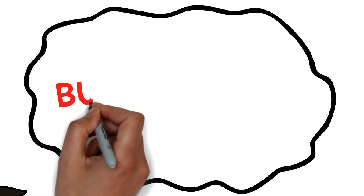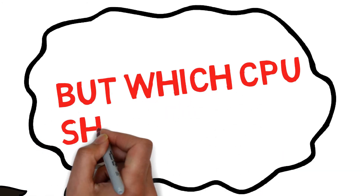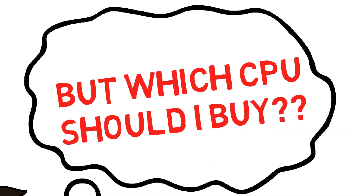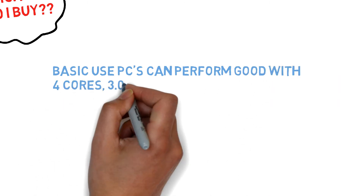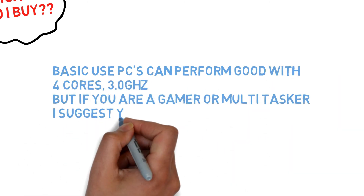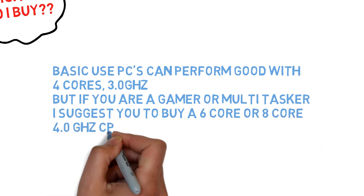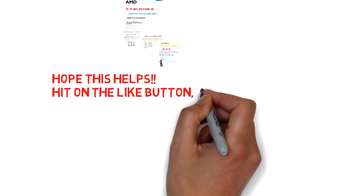Now, which CPU is best for you? Basic-use PCs can perform well with four cores or three gigahertz speed. But if you're a gamer or multi-tasker, I suggest you buy a six-core or eight-core processor with four gigahertz speed. Hope this helps!